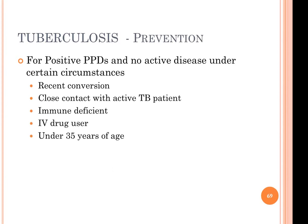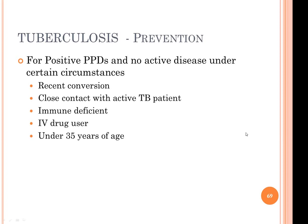For prevention: for positive PPDs with no active disease, prophylactic medication is given under certain circumstances — recent conversion, close contact with TB patients, immunodeficiency, IV drug use, and age under 35. Medication is generally taken for 6 to 12 months and is shown to be 70% effective in reducing the development of active tuberculosis.